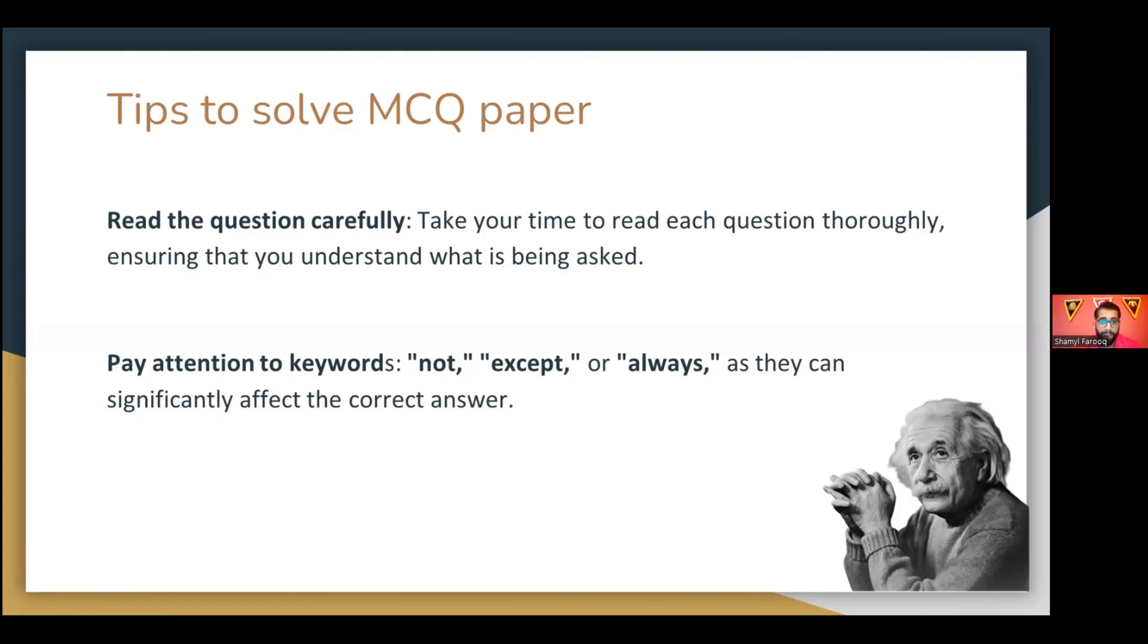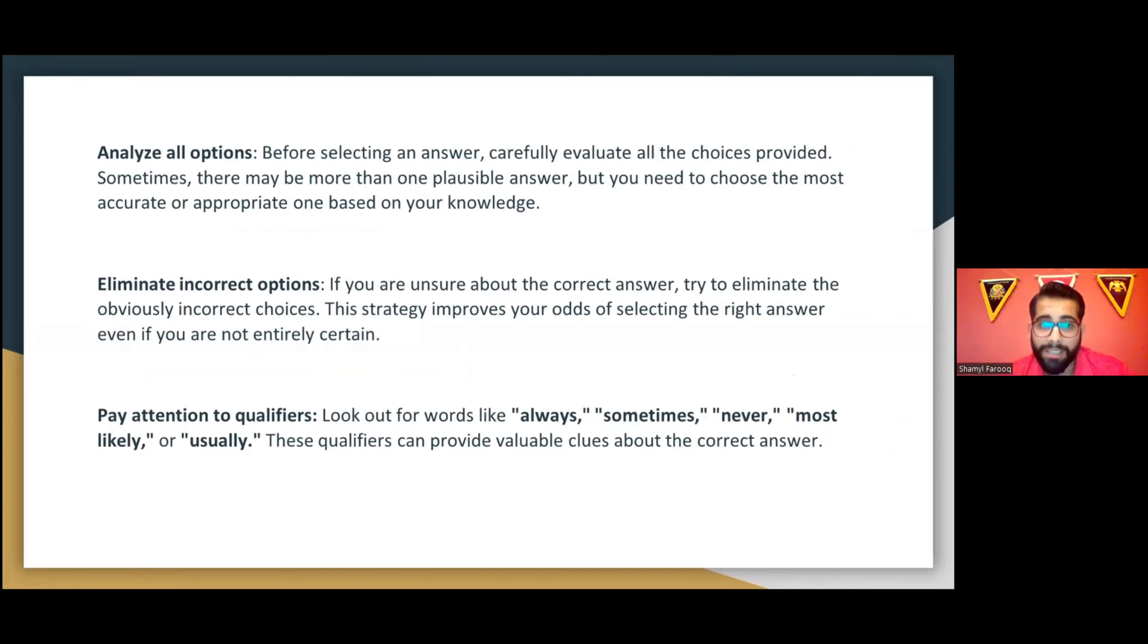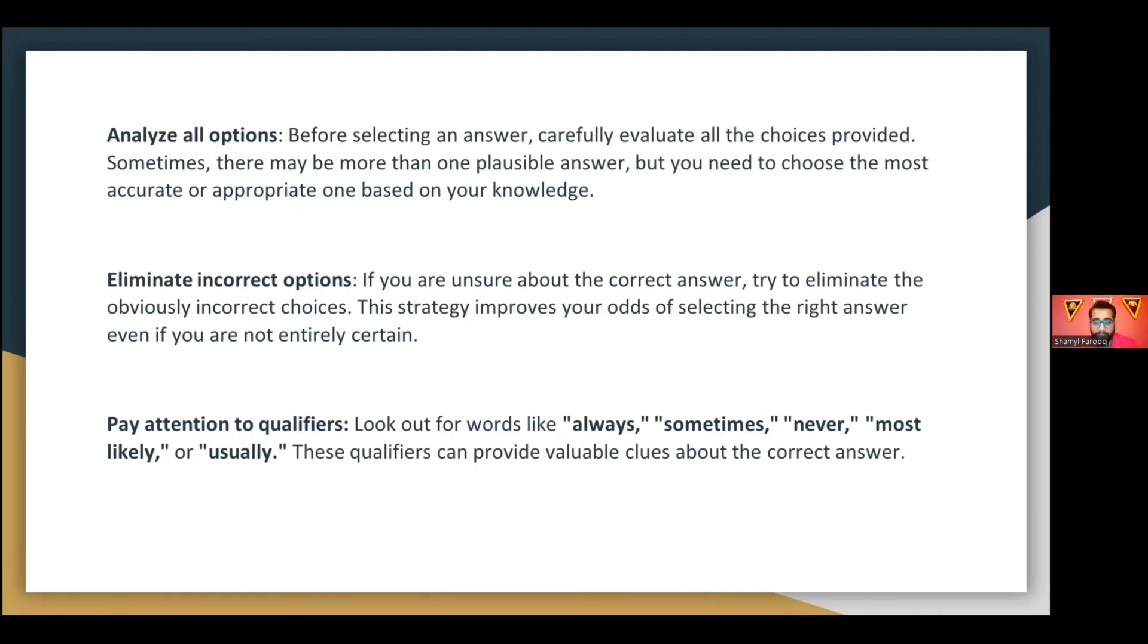Next tip: analyze all options before selecting an answer. Carefully evaluate all choices provided. Sometimes there may be more than one plausible answer, but you need to choose the most accurate or appropriate one based on your knowledge. I know you might have come up with questions where they have multiple correct answers and you're like Cambridge has lost it, but try to understand - choose the one that you think is most appropriate. Choose the one that is more accurate and appropriate that you remember from your notes or book or when you were practicing past paper questions.